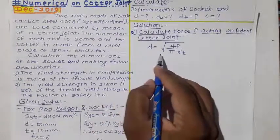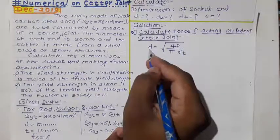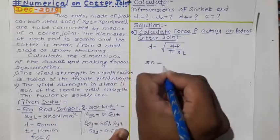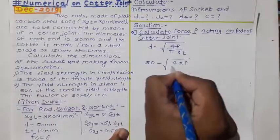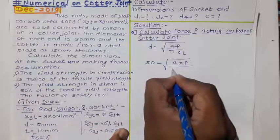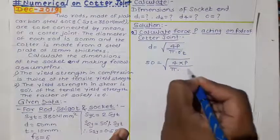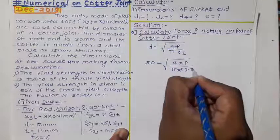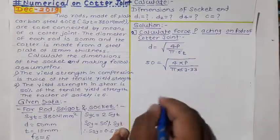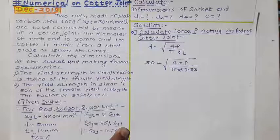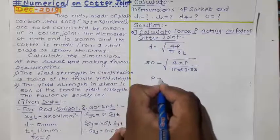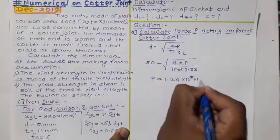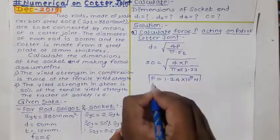To find out force P acting on the rods of the cotter joint, we refer to the equation from step number one. In step one, we used to calculate the diameter of the rod, small d, but here the diameter is given as 50mm and force P is not given. Using this equation and substituting d = 50mm and the permissible tensile stress of 63.33, after calculation we get force P as 1.24 × 10⁵ N.